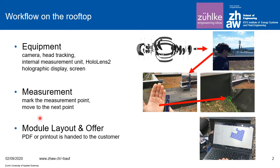From the menu, different model types and mounting options are chosen along with different types of shading losses. Finally, the customer receives the offer right on the rooftop or in front of the building, just a few minutes after the measurement is done.